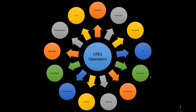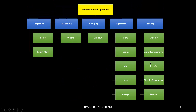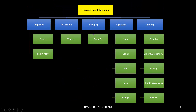Let's start with the most frequently used operators in LINQ: projection, restriction, grouping, aggregate, and ordering. Projection is nothing but selecting the column — we may select a single column or multiple columns, that is select many.